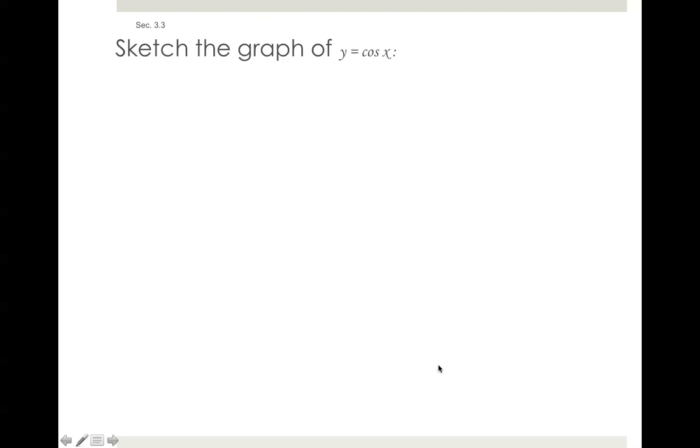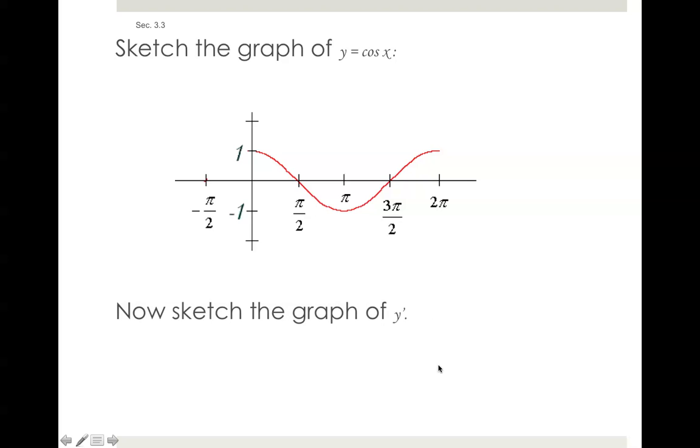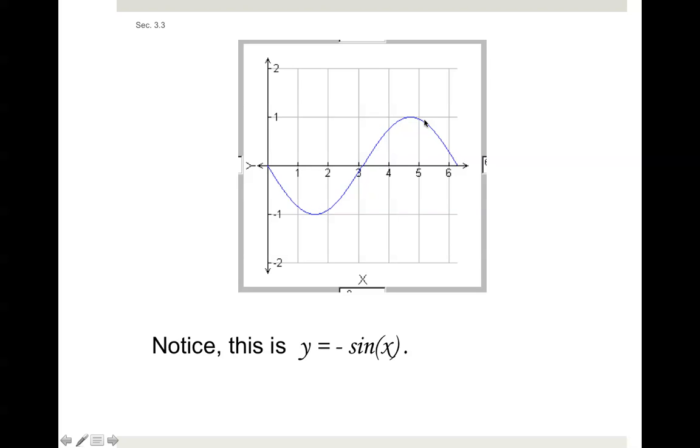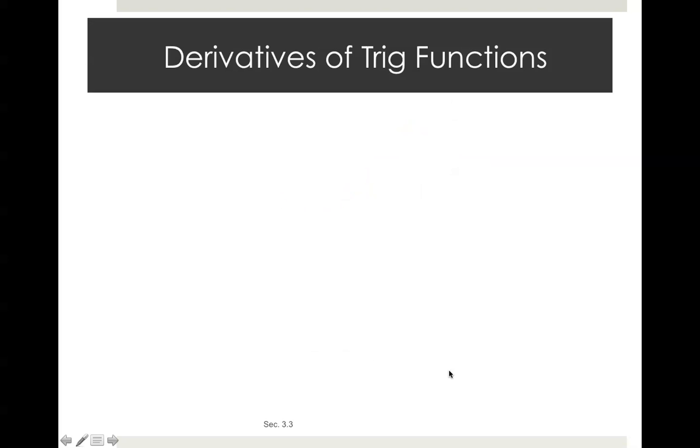Sketch the graph of y equals cosine x. There it is. Now sketch the graph of y prime. The slope here is 0, so it should be right here. This goes down, so this is going to go under, and it's going to kind of look like that. Notice that y equals the negative sine x.